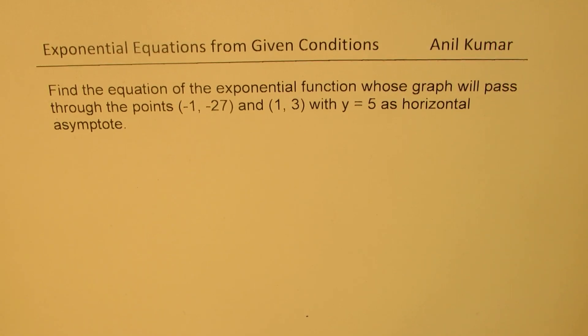I'm Anil Kumar. Welcome to my series on exponential equations. The question here is: find the equation of the exponential function whose graph will pass through the points (-1, -27) and (1, 3) with y = 5 as horizontal asymptote.